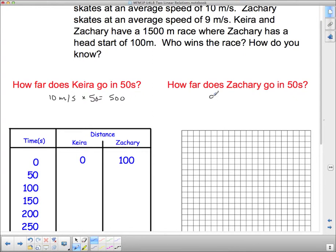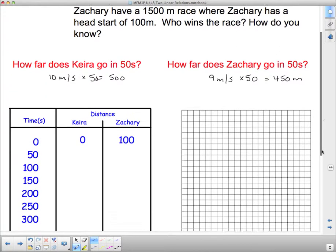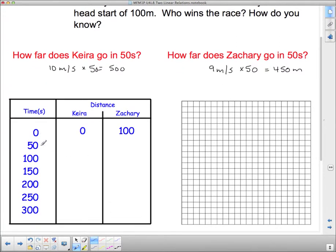How about Zachary? Zachary goes 9 meters per second. So in 50 seconds, I've got to multiply that by 50. That's going to be 450 meters in 50 seconds. So let's fill this out. From 0 to 50, Kira's going to go from 0 to 500. And then she's going to go another 500, so she's going to get to 1,000. And then she's going to get to 1,500. And 2,000, and now the race is over, but I can keep going. 2,500 and 3,000.